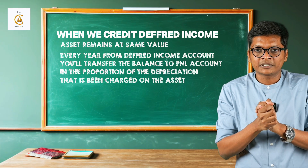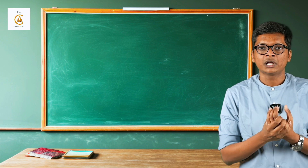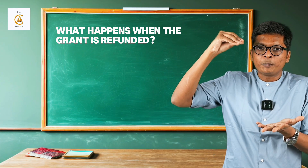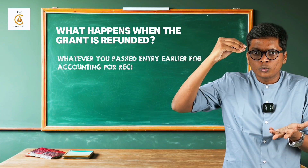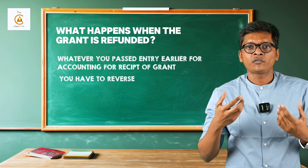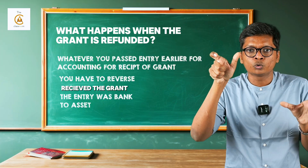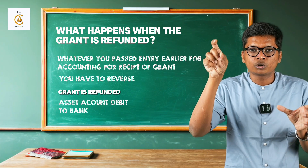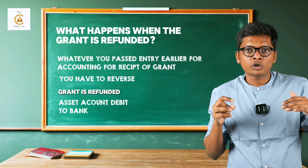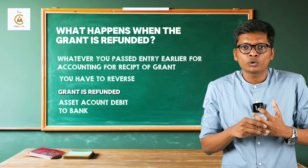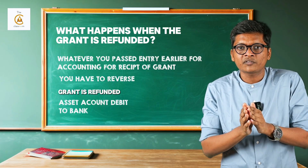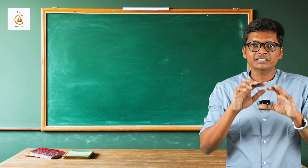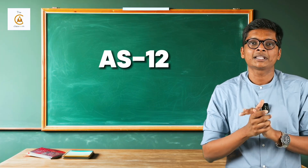Now, what happens when a grant is refunded? Whatever entry you passed earlier for accounting for receipt of grant, you have to reverse it. For example, when you received the grant, the entry was bank to asset. When the grant is refunded, you will credit bank and debit the asset - asset account debit to bank - because you are reversing and giving the money back. Refund of government grant is treated as an extraordinary event under AS 5. This is the quick capsule summary of AS 12.